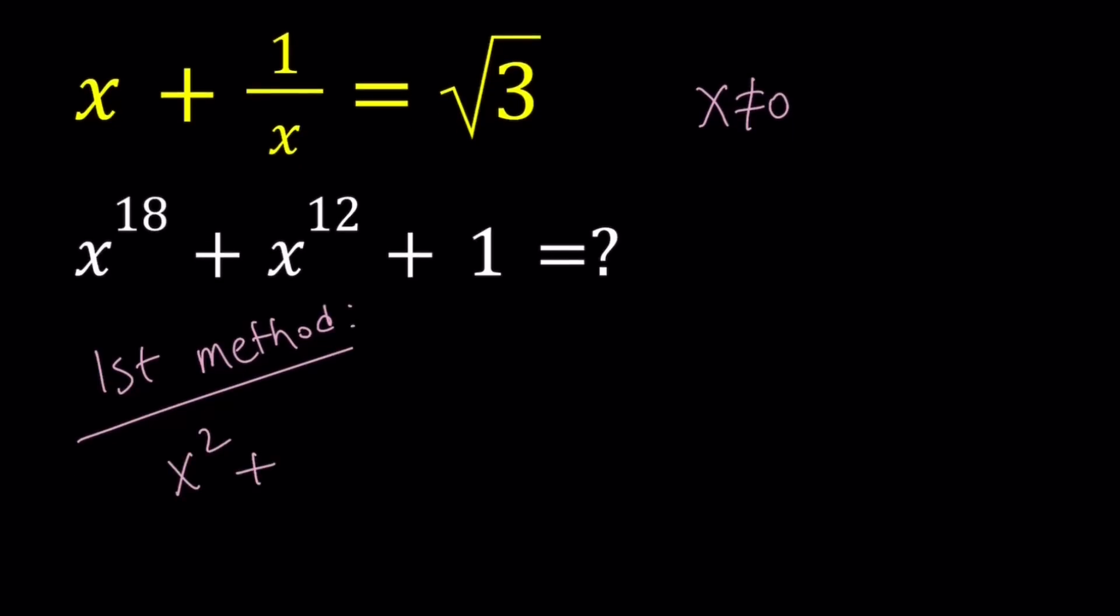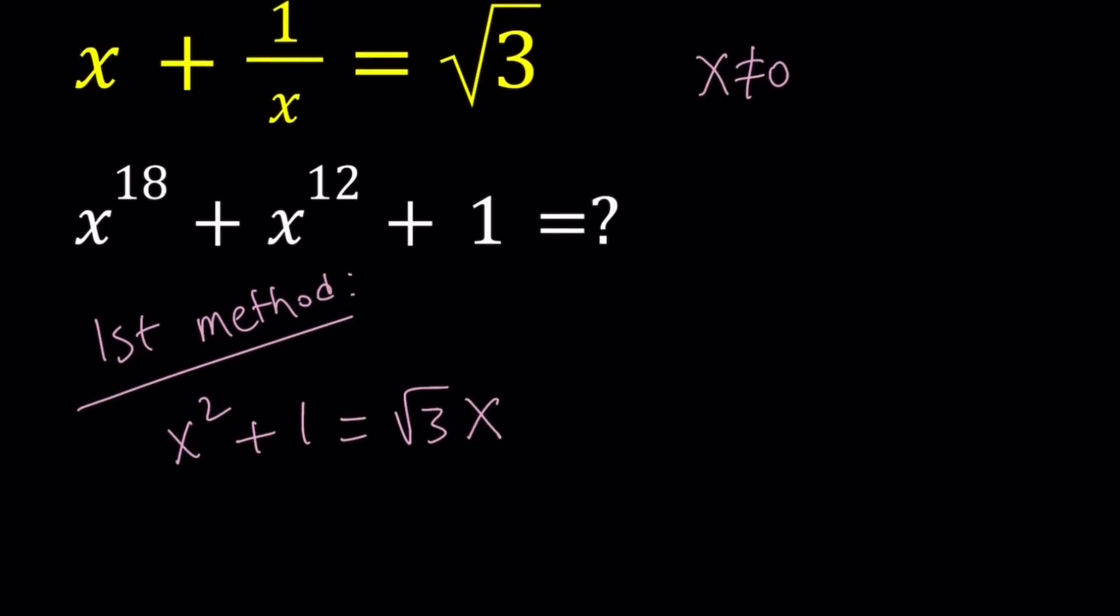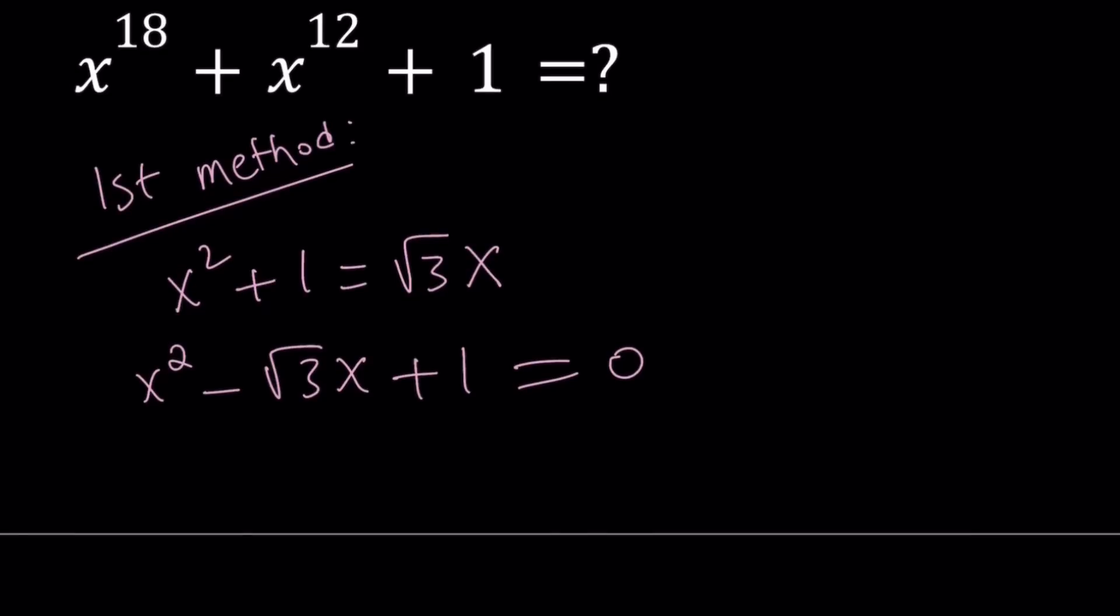That gives me x squared plus 1 equals square root of 3x. It's better than making a common denominator. Now, how can I use this quadratic to evaluate this 18th degree polynomial? So here's what I'm going to do. I'm going to use the quadratic formula.